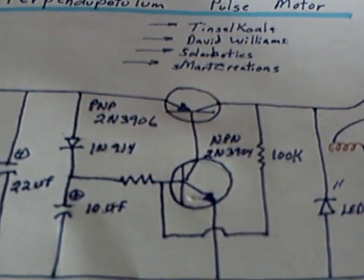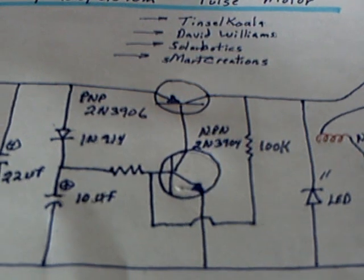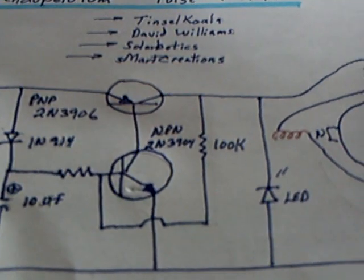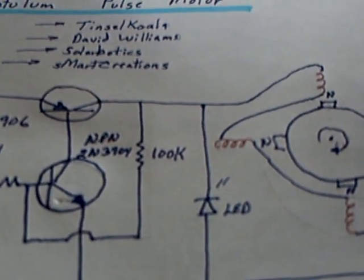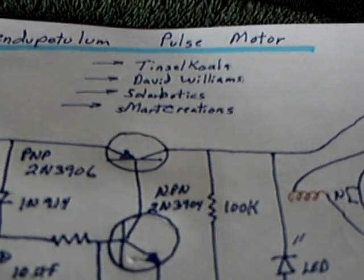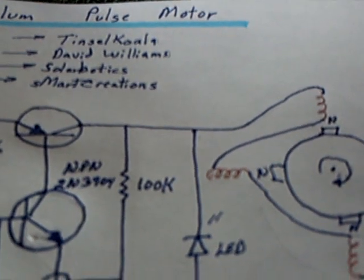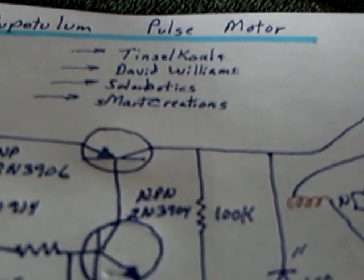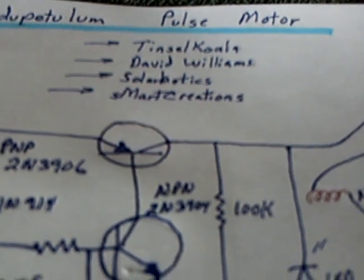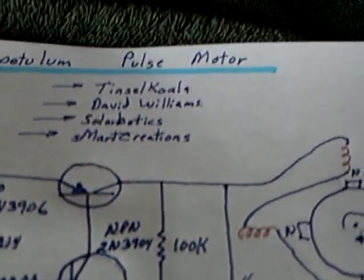The transistors are a PNP and an NPN. 2N3906 is the PNP and 2N3904 is the NPN. Any of these small little transistors will work.